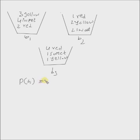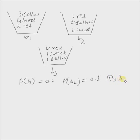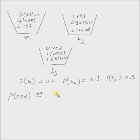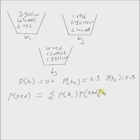We have the given probabilities: P(B1) = 0.4, P(B2) = 0.3, and P(B3) = 0.3. The sum rule of probability gives us the probability of red as the summation over i equals 1 to 3 of P(basket i) multiplied by P(red from each basket).